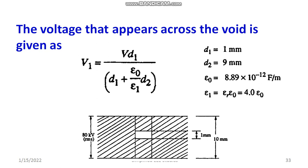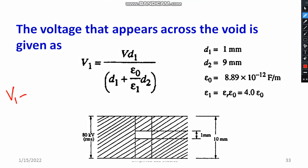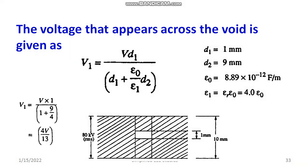Substituting: V1 = V × 1 divided by (1 + ε_0 × 9 / (4ε_0)). The two ε_0 terms cancel each other, leaving V1 = V divided by (1 + 9/4), which simplifies to V1 = 4V/13.